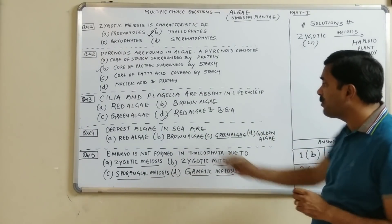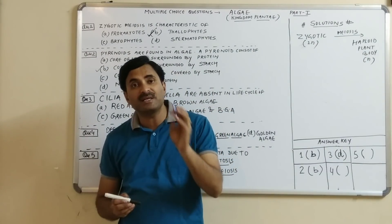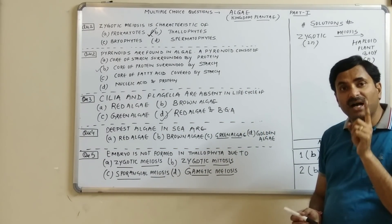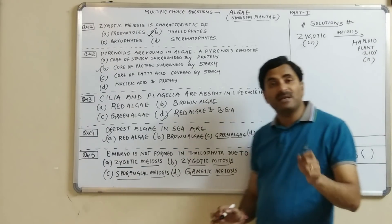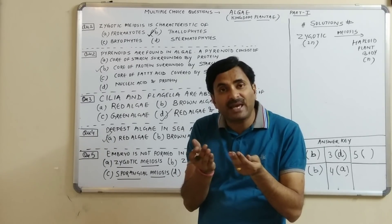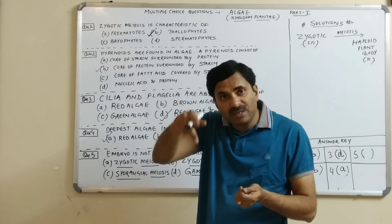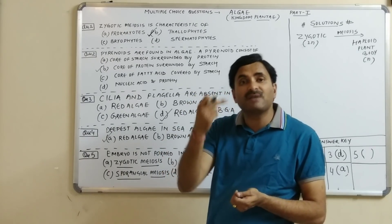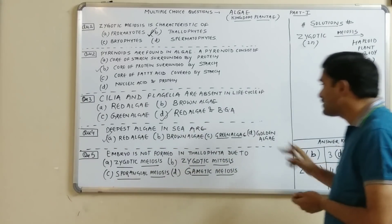Question number four: deepest algae in the sea. The deepest algae found in the sea are the red algae, so the answer is A. Red algae show various colors at different depths. On the surface they appear blue due to r-phycocyanin pigment, but deeper in the sea the r-phycoerythrin pigment is present, giving a red color. The deepest algae in the sea are the red algae.